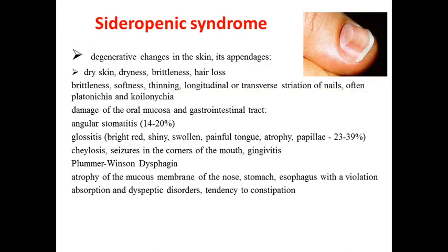Sideropenic syndrome is represented by degenerative changes of skin and its appendages: dry skin, hair loss, softness, thinning, and longitudinal or transverse striation of nails. Often platyonychia and koilonychia — as you can see on the picture, koilonychia is present. There are also changes of the oral mucous membrane and gastrointestinal tract.